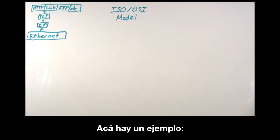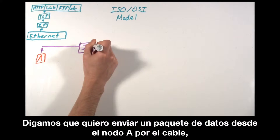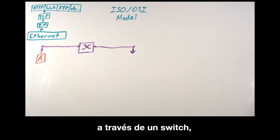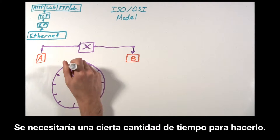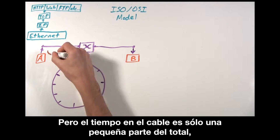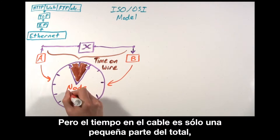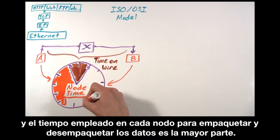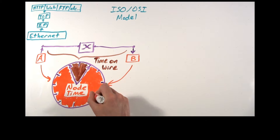Here's an example. Let's say I want to send a data packet from node A down the wire, through a switch, and onto node B. It would take a certain amount of time to do so. But the time on the wire is only a small slice of the pie, and the time spent at each node packing and unpacking the data is the bulk of it.